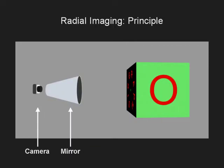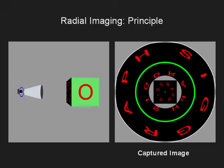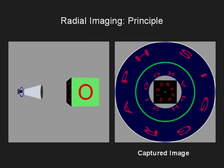Consider a conventional camera looking through a hollow cone that is mirrored on the inside. The axis of the cone and the optical axis of the camera are coincident. The scene is captured from the camera's center of projection as well as a circular locus of virtual viewpoints. An image captured by this system looks like a donut, where the scene is imaged directly by the camera in the center while its reflection, corresponding to the virtual viewpoints, appears in the annulus.